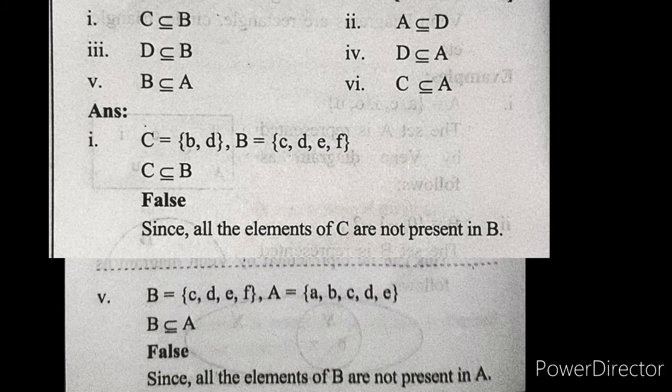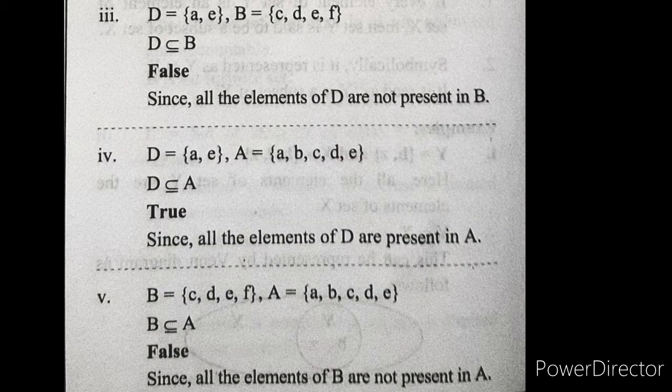Next: D is a subset of A — this is true. The elements of D are A and E, and both are present in set A, whose elements are A, B, C, D, E. So all elements of D are present in set A. That's why this is true.